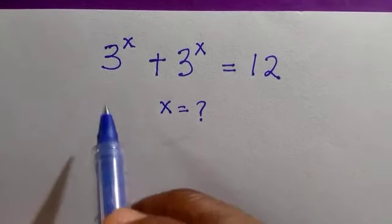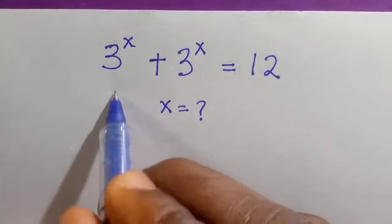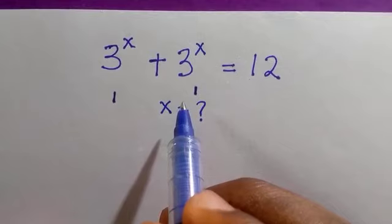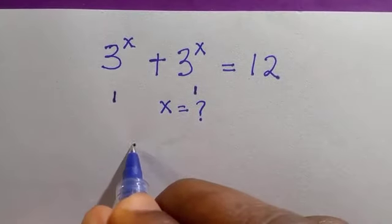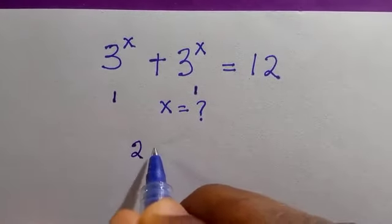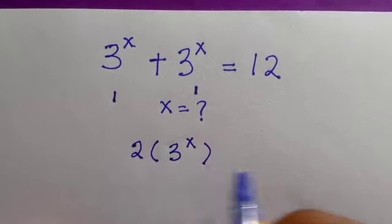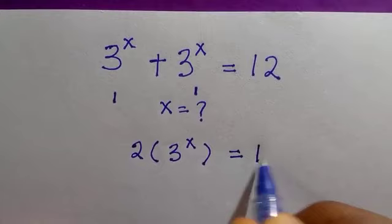Since we have two identical exponents here, I can call this one 1 and this one 1. By adding 1 plus 1 together we get 2, and we put one of these in the bracket which is 3 raised to power x, and everything equals 12.